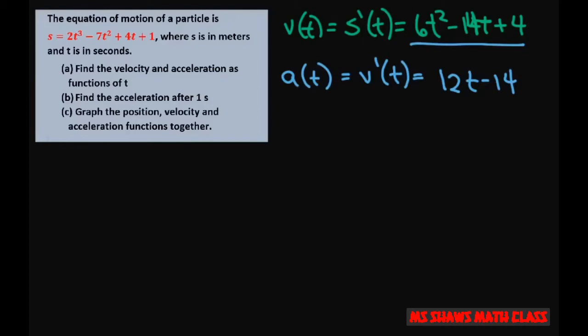And finally, we want to see the acceleration after 1 second. So you just plug in 1 into this equation because that's your acceleration. So that's 12 times 1 minus 14, which equals negative 2 meters per second squared.